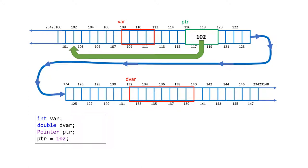The value we put in the pointer should be an address where we have something of our own. If I put 108, I'm fine because that's mine. But when you write a program and declare 'int a', you know you have an integer named 'a' but you don't know where in memory it is. For that we have the address-of operator — instead of manually writing the address, you use address-of on a variable, which extracts the address and puts it into the pointer.